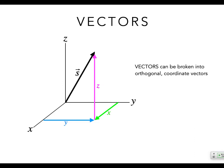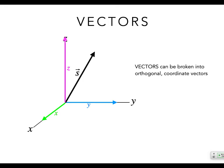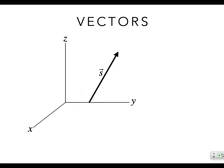Vectors can be broken into orthogonal — which just means perpendicular — component vectors. A component vector is just a vector that you add to the other components to make up the whole thing. What this means is that for every equation you get, you can have two or three equations that are basically identical — you have it in x, in y, and in z. The nice thing about vectors is they don't stick to a particular point.